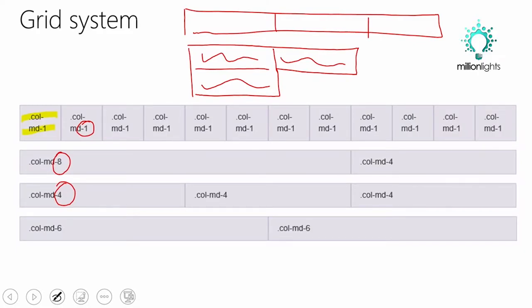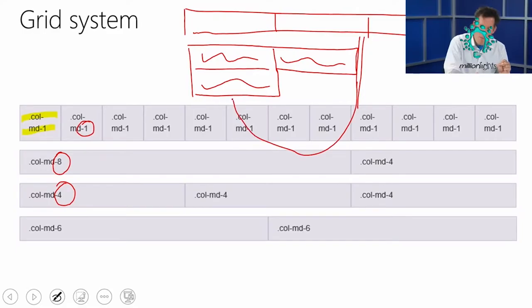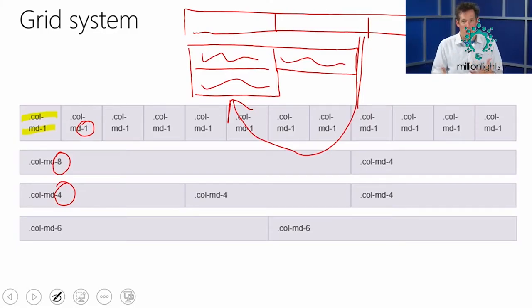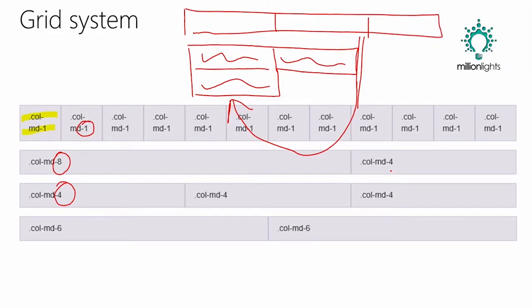When you go beyond 12 columns, Bootstrap still wants to display the data — it doesn't give you an error message. So when you go past 12, it's automatically going to move that onto the next row. That's what wound up happening: when you did your math and hit 13 or 14 or 15 on a particular row, it wrapped. So let's actually bring this back — I'm going to do a demo here. Let me get out of my slide and bring that back.